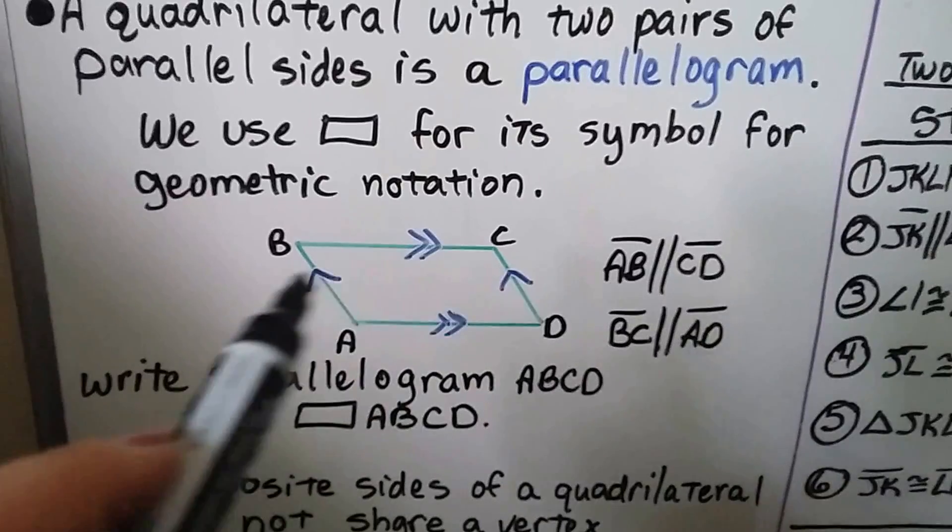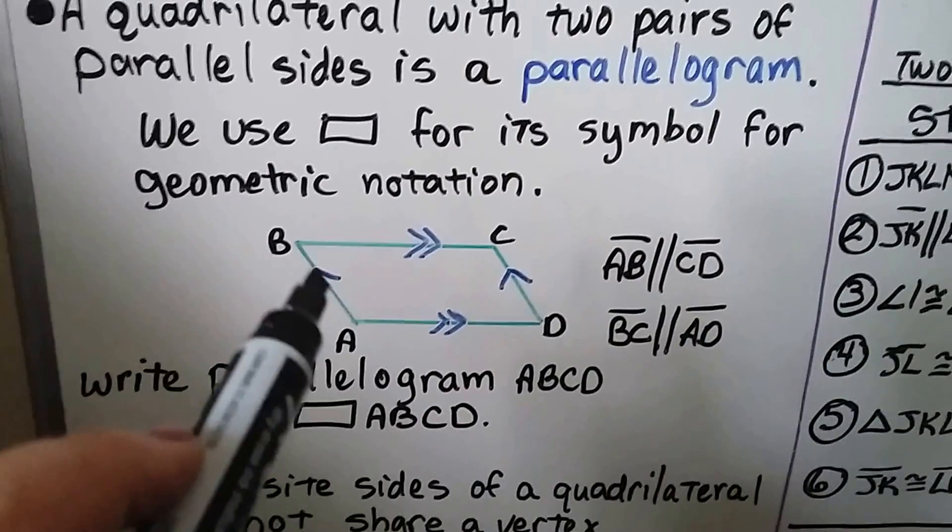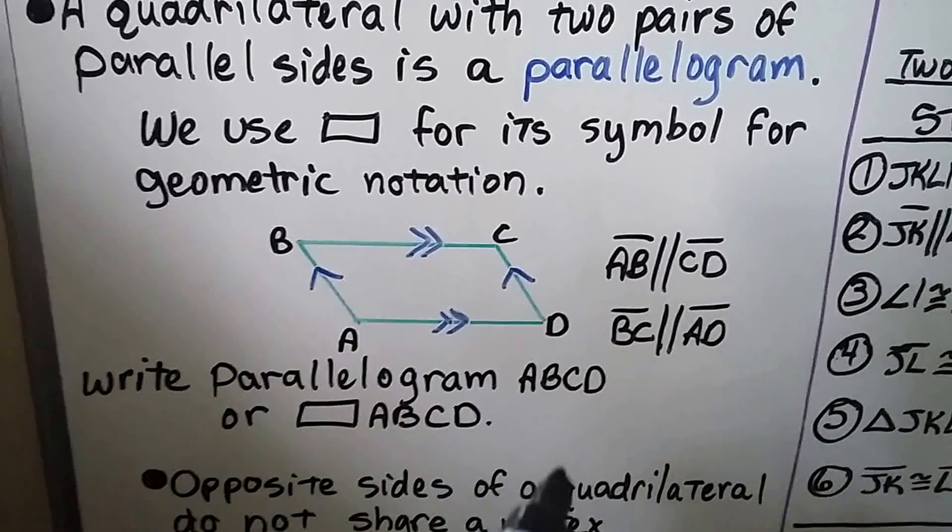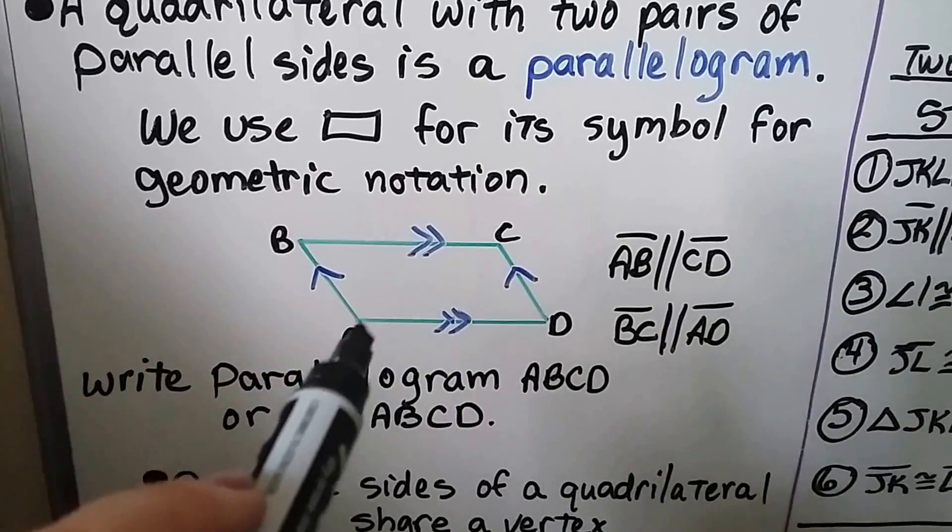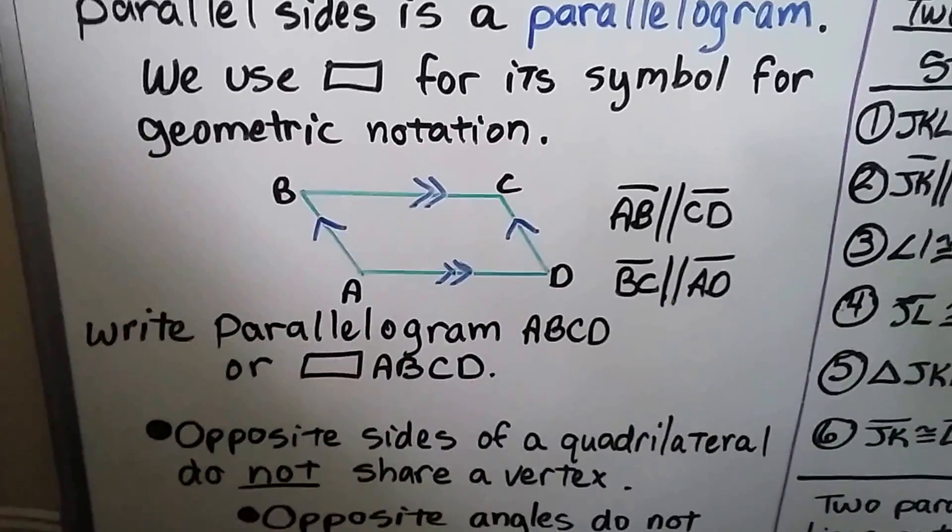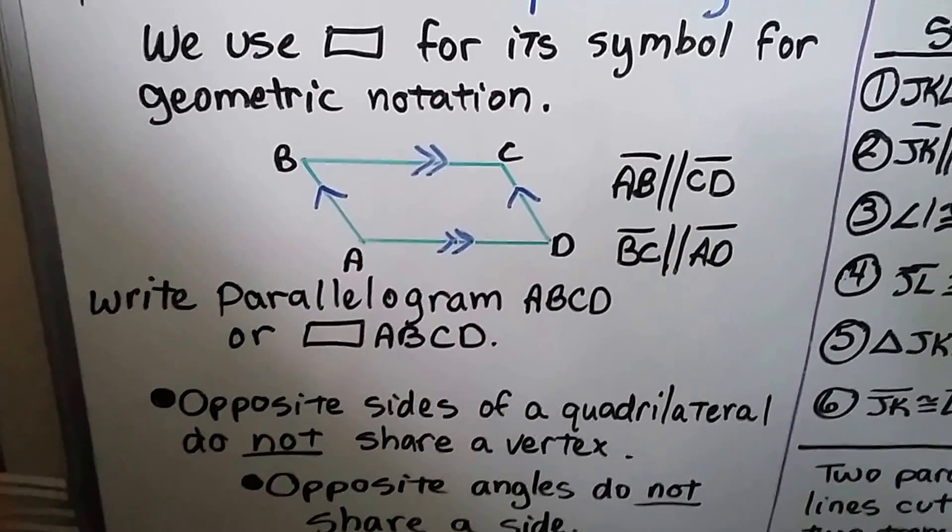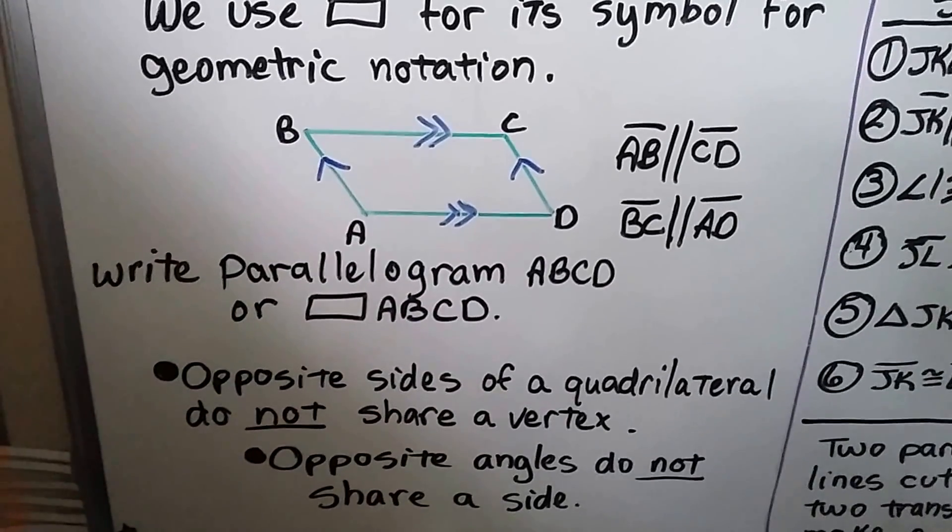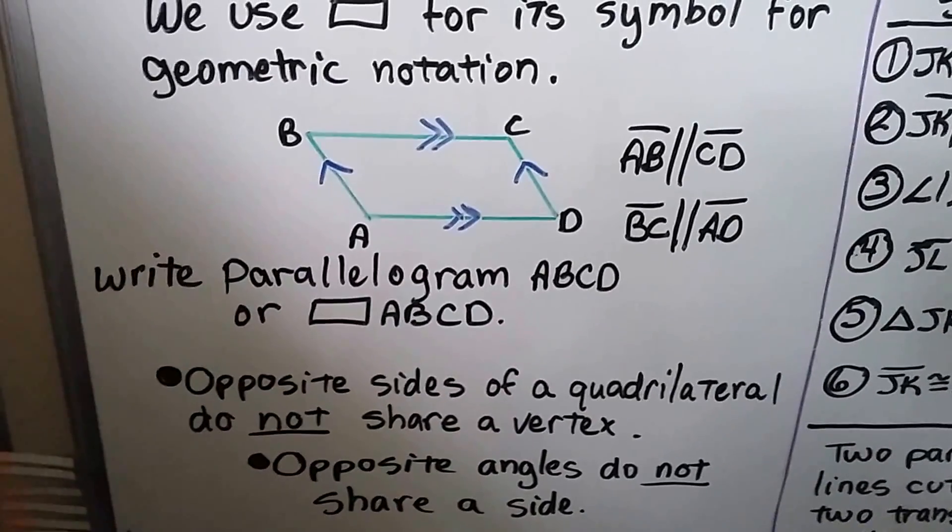So we see our parallel marks here that we've learned about. So AB is parallel to CD, and BC is parallel to AD. And opposite sides of a quadrilateral do not share a vertex, and opposite angles do not share a side.